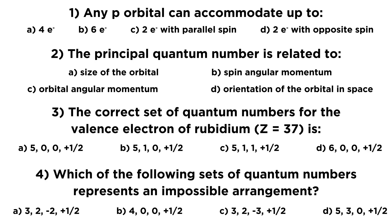The first question says, any p-orbital can accommodate up to, and we have four options here. Number two says, the principal quantum number is related to, and we have four options again. Then number three, the correct set of quantum numbers for the valence electron of rubidium, Z equals 37, is, and we have four options here. And then number four, which of the following sets of quantum numbers represents an impossible arrangement? So we've got four options here, and we need to know which one is not feasible.